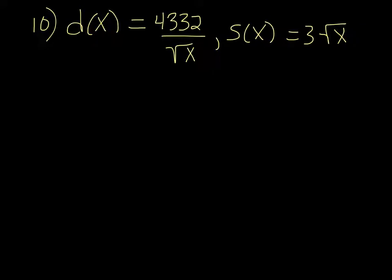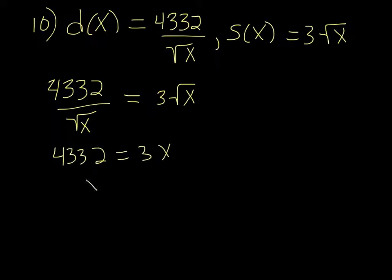Number 10, we're given the demand function, 4,332 over root x, and the supply function, 3 root x. We want to find the equilibrium quantity, so we're going to set them equal to each other. Multiply both sides by square root of x, so we're going to get 4,332 equals 3x. Divide by 3, and we get 1444.